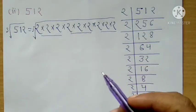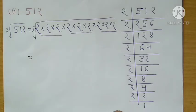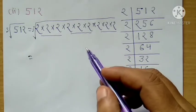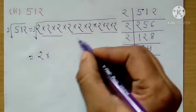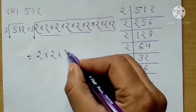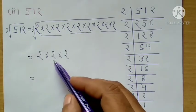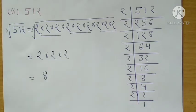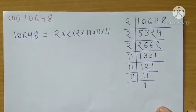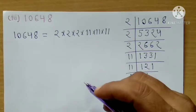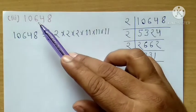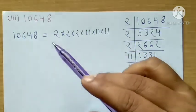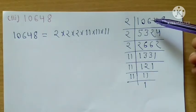Now we have three pairs of prime factors. One pair, two pairs, and three pairs. If by chance a pair doesn't complete, then that number is not a perfect cube root. We take one number from each pair. Here we have the factor 2 appearing three times in pairs. So the answer is: 2 × 2 × 2 equals 8. So the cube root of 512 is 8.